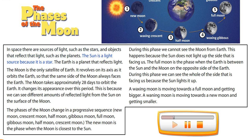The Sun is a light source because it is a star. The Earth is a planet that reflects light. The Moon is the only satellite of Earth. It revolves on its axis as it orbits the Earth, so that the same side of the Moon always faces the Earth. The Moon takes approximately 28 days to orbit the Earth.